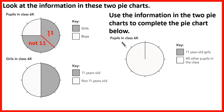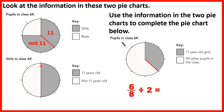Half of the girls' section represents 11-year-old girls, and the other half represents girls who are not 11. To complete the pie chart, we need to identify the 11-year-old girls, which is three-eighths of the whole pie chart. Alternatively, we know six-eighths are girls, and dividing by 2 — because half the girls are 11 — gives us three-eighths. So we shade three-eighths of the pie chart.